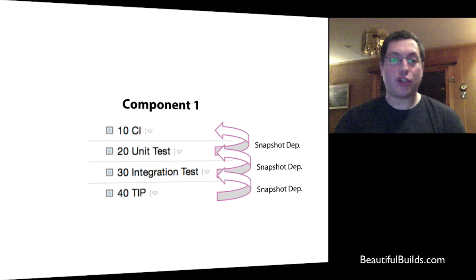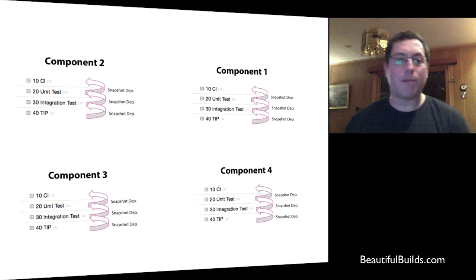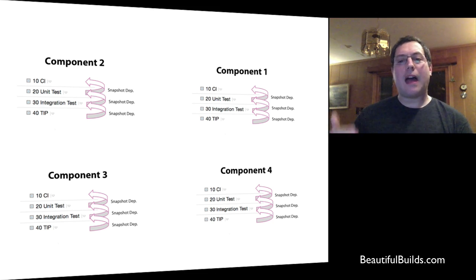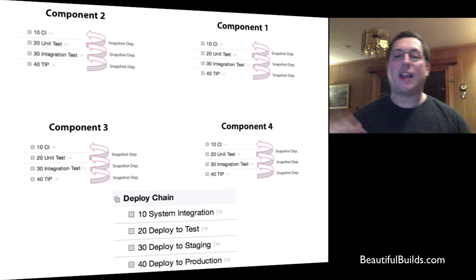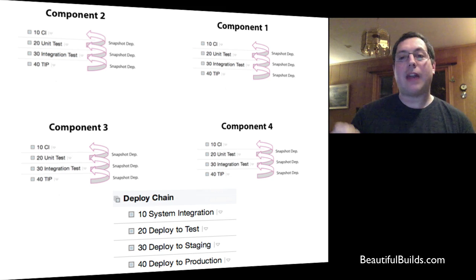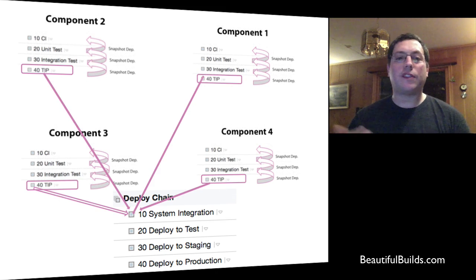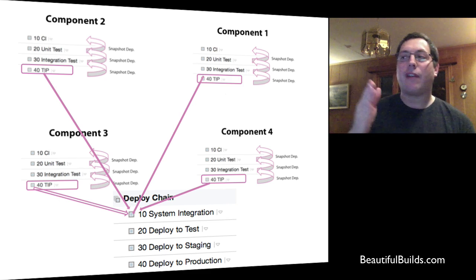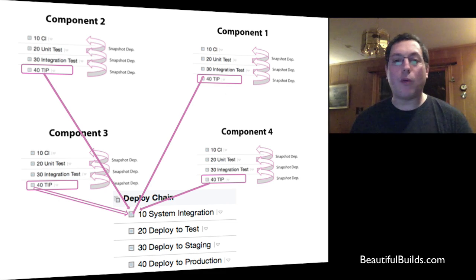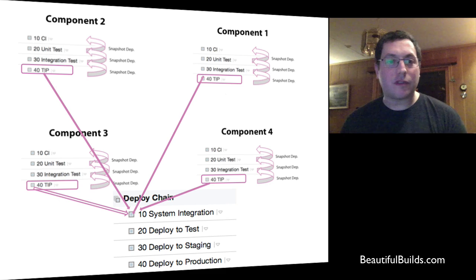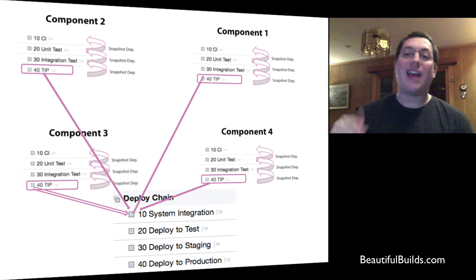Tip represents the best deployable version of those binaries. Now imagine we have four components, each developed in parallel with their own pipelines. We can see the full flow, and now imagine we have a deployment chain — system integration, deploying all the components to test, staging, and production. We can have that convention work for us, taking snapshot dependencies directly from tip, so in system integration we always test with the latest versions of all components.